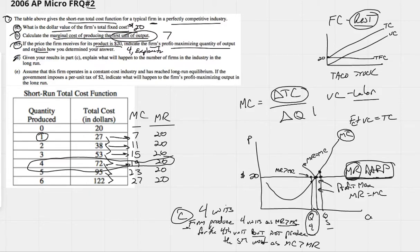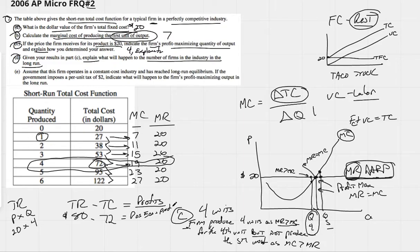All right. Part D, given your results in part C, explain what will happen to the number of firms in the industry in the long run. Well, to know what happens to the number of firms, whether there's more firms or less firms, we need to know whether we made profits or losses in the short run. So we do have our total cost. Our total cost is 72 here. To find out whether we made profits, we need to know what our total revenue is, take away our total costs, and that should give us our profits if we made any. We know total revenue is price times quantity. We know that our price is 20 bucks. We know that we sell four units, so our total revenue is $80. Can we see that? Our total cost was 72, and our total revenue was 80. We have positive economic profits of $8.